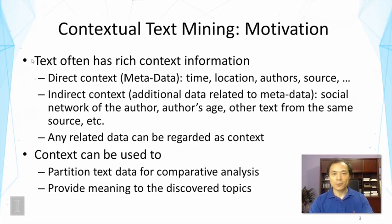Indirect text context refers to additional data related to the metadata. For example, from authors we can further obtain additional context such as the social network of the author or the author's age. Such information is not in general directly related to the text, yet through the authors we can connect them. There could also be other text data from the same source, and in general any related data can be regarded as context.